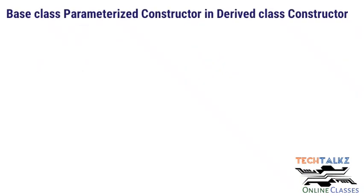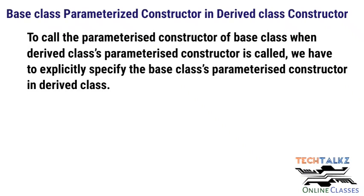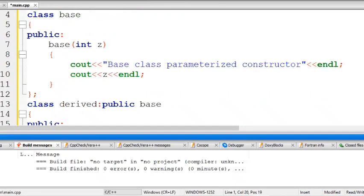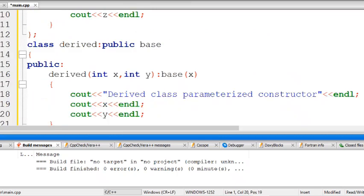Now the next condition considers parameterized constructors in base and derived classes. When parameterized constructors — that is, constructors with arguments — are used, the base class has a parameterized constructor. In this program, the base class has a parameterized constructor that takes an argument, and it prints the base class parameterized constructor along with the variable value.